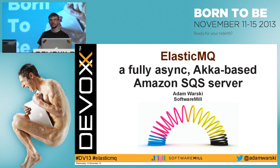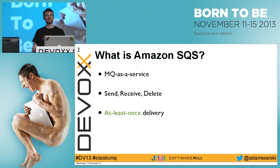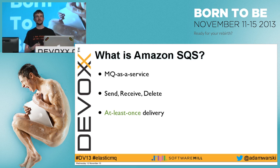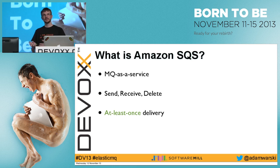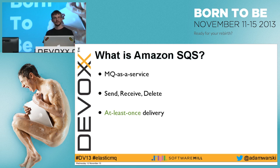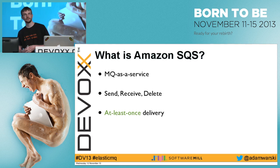First, a quick introduction or reminder of what Amazon SQS is. Amazon SQS is one of Amazon's offerings — it is a message queue as a service, offering basic message queue operations through a REST interface. You can send a message to the queue, receive the message, and delete it. Amazon SQS offers at-least-once delivery, so when you send a message you can be sure you will receive it at least once.